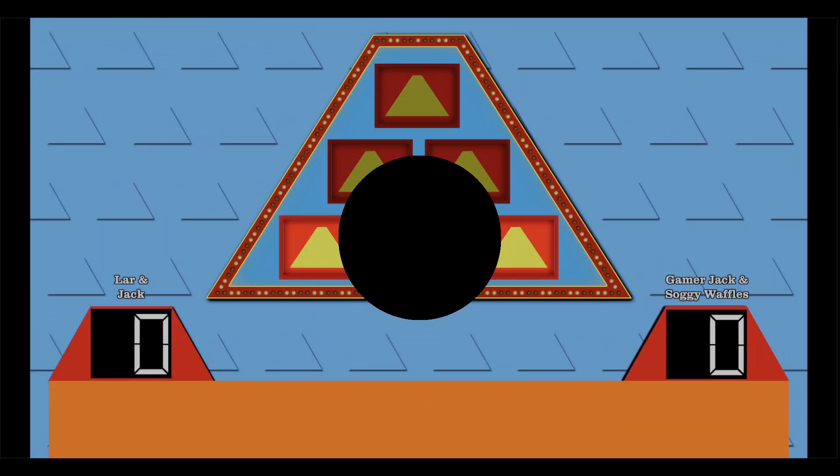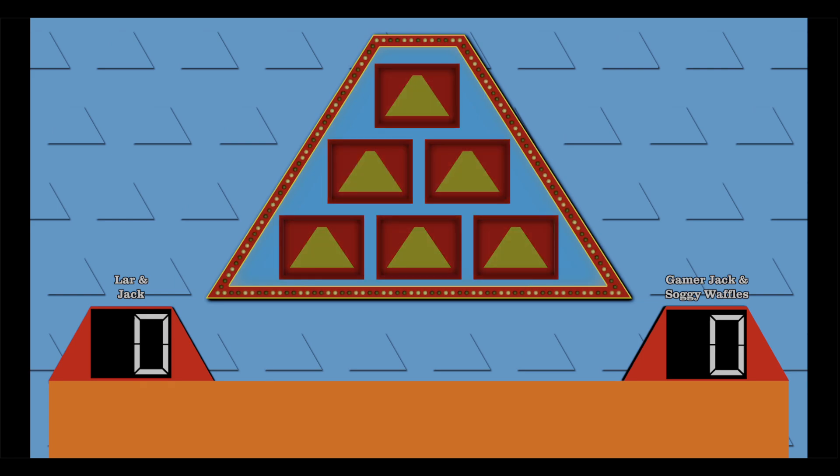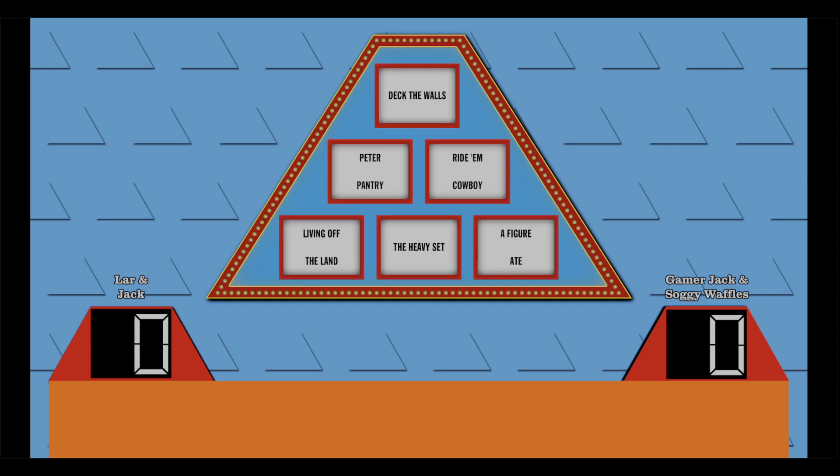And we're back with the $25,000 pyramid. Yard and Jack, y'all struggled first game. So, we're gonna let you guys go first. We have Deck the Walls. Peter Pantry. Ride Them Cowboy! Living Off the Land. The Heavy Set. And a Figure Eight. One of them is a mystery seven. I can't tell you what they have in common. But if you get all seven, I'll send you to Fiji. Anyways, Yard and Jack, who's giving clues first?